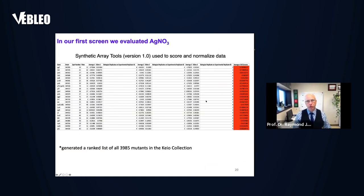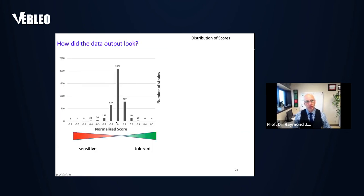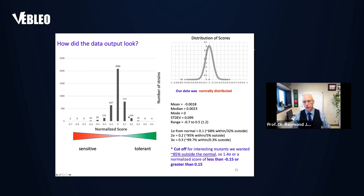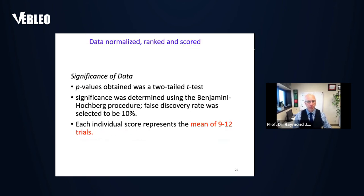We generated a ranked list of close to 4,000 genes and had to figure out what to do with this data. The scores were normally distributed, so we could use normal statistics, thinking about standard deviations sigma factor. We decided on a cutoff of 85%, a sigma factor of 1.4 or a normalized score of 0.15, to select genes involved with stress or tolerance. We used a two-tailed t-test for p-values, the Benjamini-Hochberg procedure for a false discovery rate of 10%, and the data represents a mean of 9 to 12 trials.